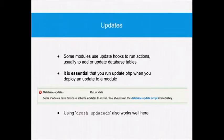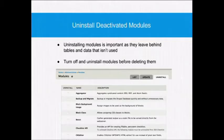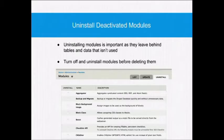Another thing: if you turn off a module, make sure you also uninstall it, especially if it's not needed. I saw a rescue site screenshot with about 50 disabled modules — they obviously installed the module, had a play, turned it off, and just left it. Unfortunately, that leaves a lot of tables and variables lying around in the database that aren't really needed. The uninstall hooks will delete those tables and get rid of all the old stuff that isn't needed.